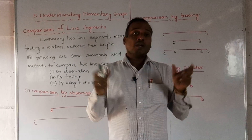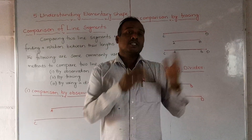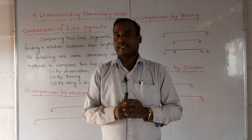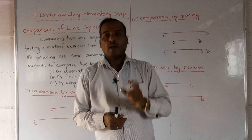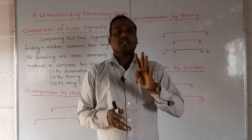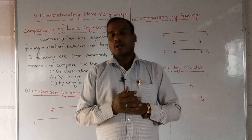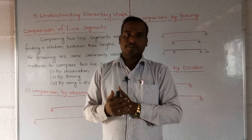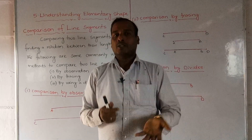So how many cases — how we will do the line segment measurement and how we will find out which line segment is greater than the other or which one is smaller than this. For that there are three methods. To find that, comparing the two line segments, there are generally three methods we use. One is by observing — by observing we can find out.